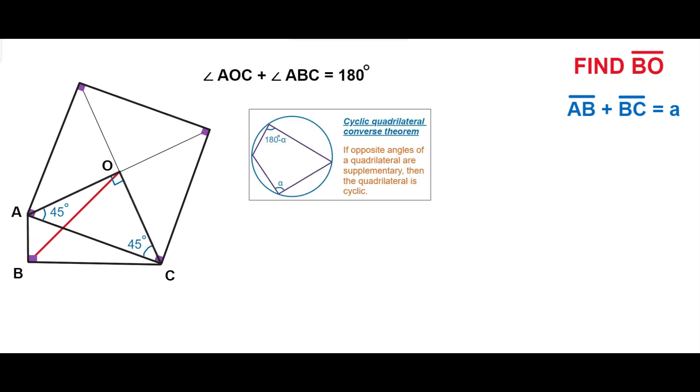According to Cyclic Quadrilateral Converse Theorem, if opposite angles of a quadrilateral are supplementary, then the quadrilateral is cyclic. We have already proved that the opposite angles AOC and ABC are supplementary.